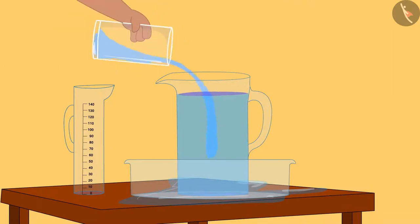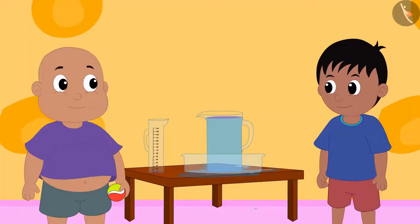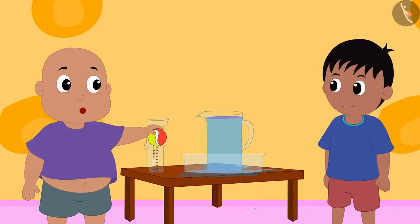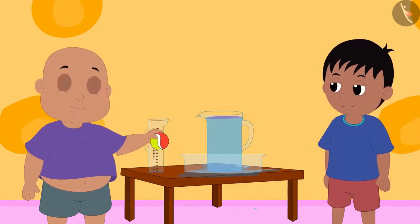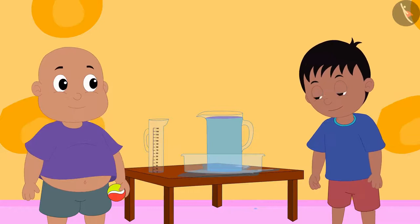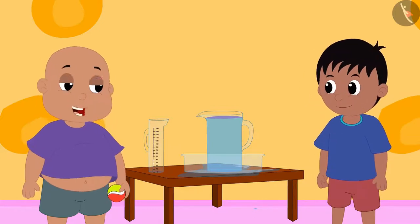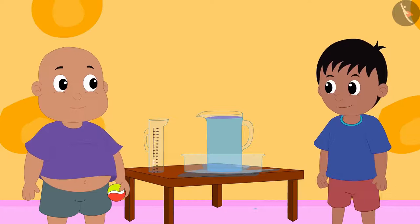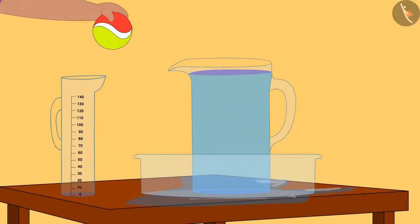Now Bablu took the ball out of the jug and filled it completely once again. Raju, now I will put this ball once again in this jug, and this time when the water spills out I will fill it in this measuring cup. Saying this, Bablu put the ball into the jug and once again water got spilled and he filled it in the measuring cup.